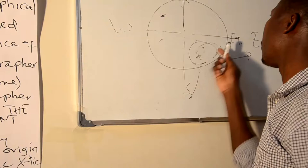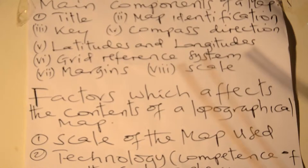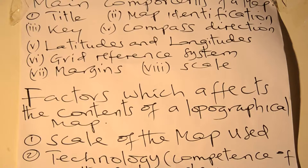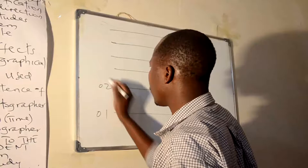Dear students, not only latitude and longitude, but also there is a grid reference system. This is a margin line drawn on the sheet showing some squares — those in northern parts are called Northern, and those in eastern parts are called Eastern. You can observe why it is called Northern at the grid reference: because it is just increasing to the northern parts. For instance, it can start from 01, 02, 03, 04, 05, 06.